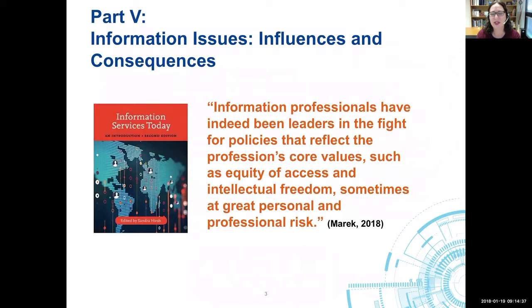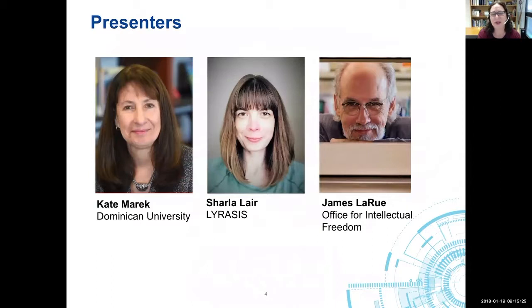Part 5, Information Issues, Influences, and Consequences, explores the profession's ethical code and the ideals of intellectual freedom, including how those principles have been challenged in the past and how they are likely to be the focus of controversy in the future. It also examines legal issues related to information access, such as copyright and information licensing. Chapter 29 kicks off this section with a chapter devoted to information policy and its evaluation. Chapter 32 addresses the complex issues in information licensing. Chapter 35 tackles the difficult issue of intellectual freedom and how technology, social change, and the changing publishing landscape affect intellectual freedom.